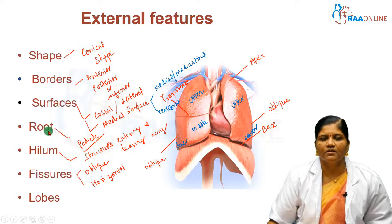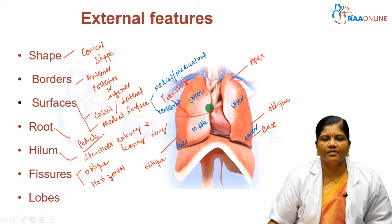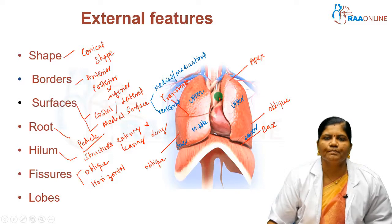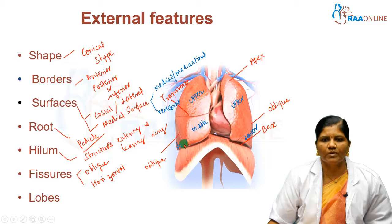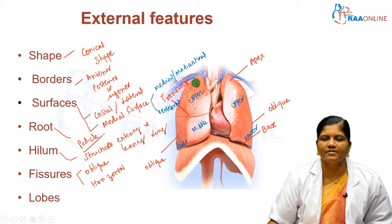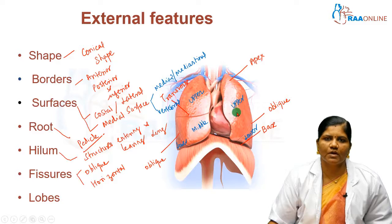The root of the lung is mainly formed by the bronchi, pulmonary and bronchial vessels, nerves, and lymphatics — it supports and keeps the lungs in position. The hilum is where structures enter and leave the lung. There are two types of fissures: oblique and horizontal. The right lung has three lobes — superior, middle, and inferior — and the left lung has only two lobes: upper and lower.